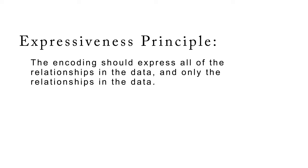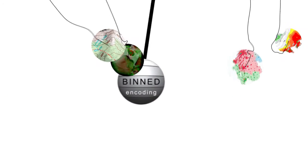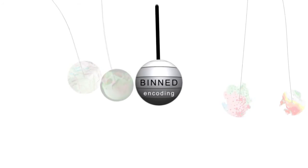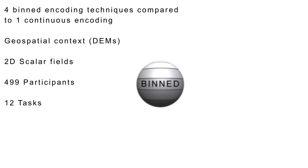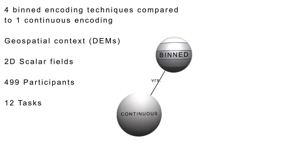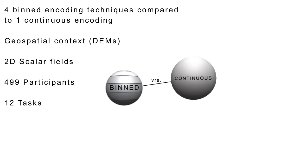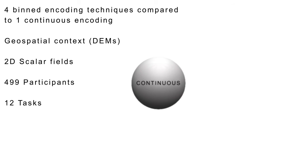The Expressiveness Principle is a foundational convention in visualization research. However, in practice, many domains violate this principle by discretizing continuous and 2D scalar fields. We explore if there's value to violating the principle with an extensive user study comparing task performance using visualizations that violate and adhere to the principle.